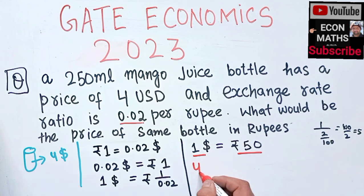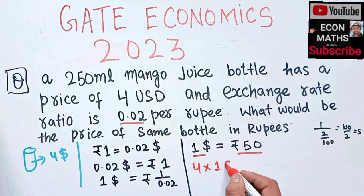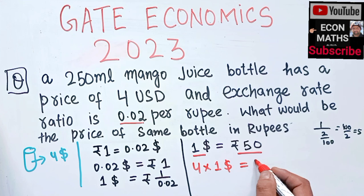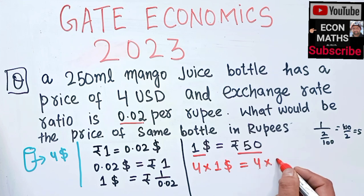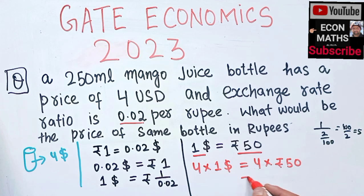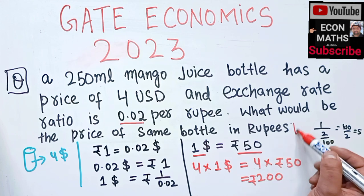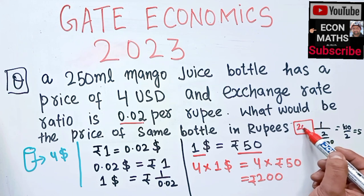The price of the bottle is four dollars, so four dollars equals four times 50 rupees. Four fives are 200, so the price of the same bottle will be 200 rupees.